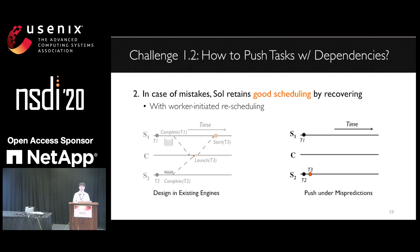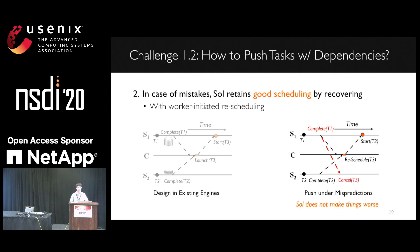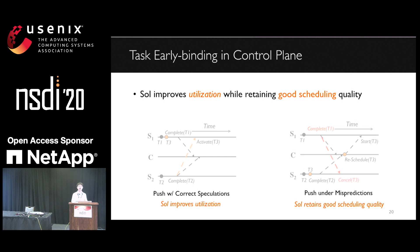To see how it works, let's replay the prior example but in a worst case, where task three is pushed to site two by mistake. When task one completes, its task manager detects a large output partition. It will then notify site two to cancel the pending task three and ask the coordinator for rescheduling. The rest performs similar to existing designs, and we can notice this task cancellation — shown in the red line — is pipelined with task rescheduling. So SOAR does not make things any worse than the baseline. In designing the control plane, SOAR can decide the right number of tasks to push, and even in case of task dependencies, SOAR can improve resource utilization by speculation while retaining good scheduling quality by recovering.